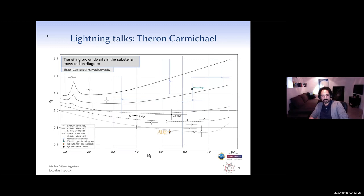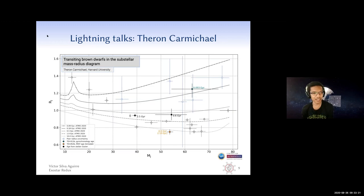All right. Thank you. Hey, everyone. My name is Theron Carmichael. I'm a grad student at Harvard University. This is going to be a slightly different topic here. So for my PhD, I'm working on the detection and characterization of transiting brown dwarves. We look to those because specifically we can get a precise mass and radius from the nature of them transiting. And we are using those to benchmark subscalar mass radius isochrones that I'm showing here in this plot.